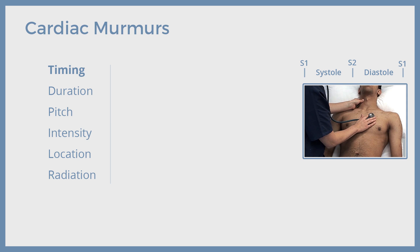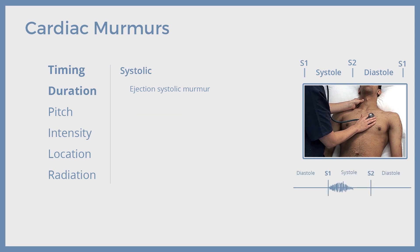Let's proceed to the next feature — duration of murmur. Based on the duration, the systolic murmurs are of three types: ejection systolic, pan-systolic, and late-systolic. An ejection systolic murmur starts at the beginning of systole and then reaches its peak in mid-systole. It is also known as a crescendo-decrescendo murmur. This murmur is characteristic of aortic stenosis.